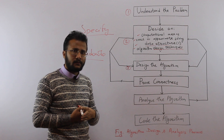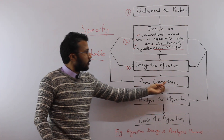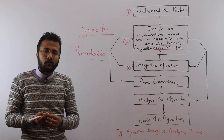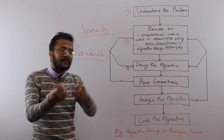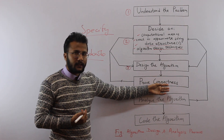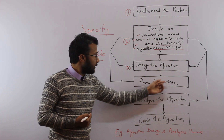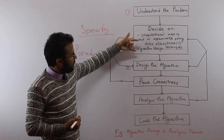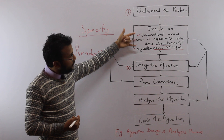Once you have specified your algorithm and documented it, you need to check whether it is correct — this is proving the correctness, step number four. Does your algorithm give the correct output for all legal inputs? You have to prove this using mathematical induction and the help of mathematics. If you cannot prove your algorithm is correct, you have to go back and redesign your algorithm using different techniques.